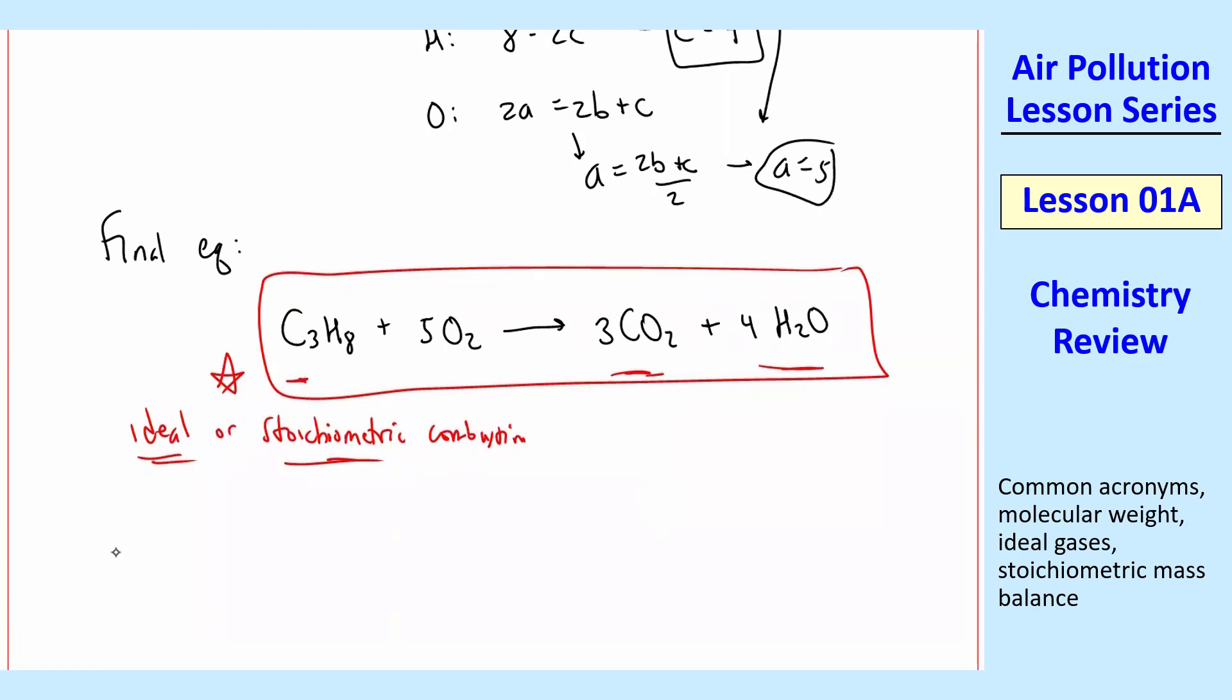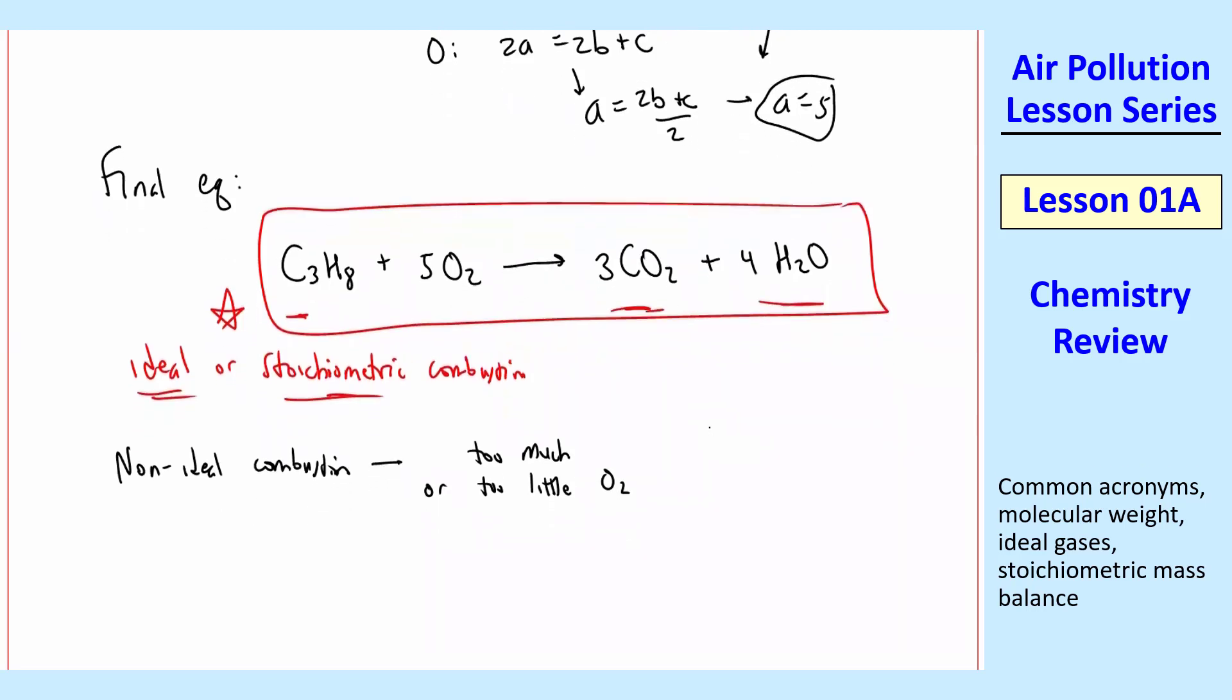And then if you had a non-ideal combustion, then we either have too much or too little oxygen in the combustion of this fuel, which happens to be propane here. And so what happens is this coefficient, which we called A, would not equal five. It'll be either too small or too big. And then you get other stuff coming out.